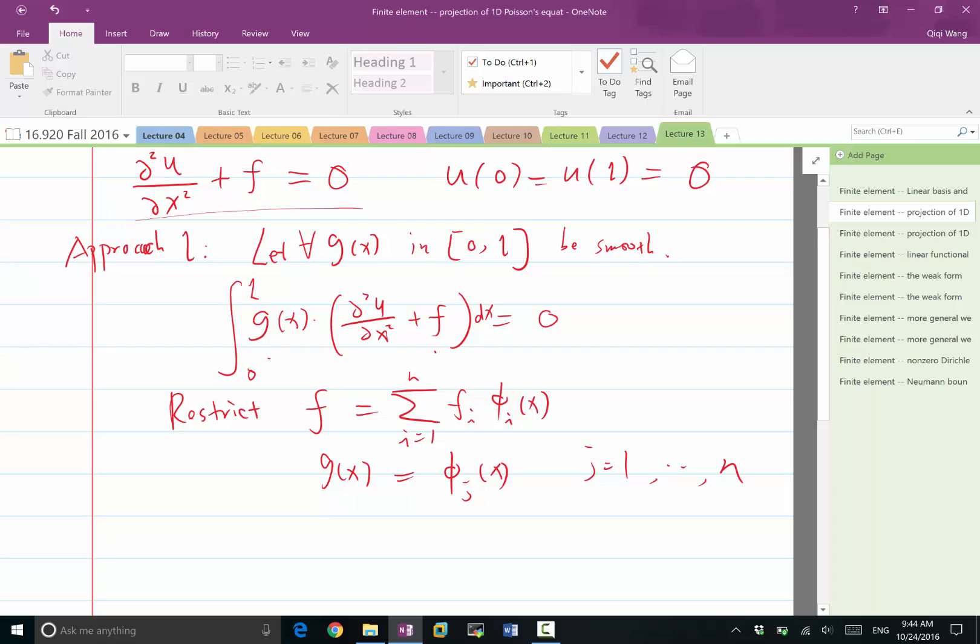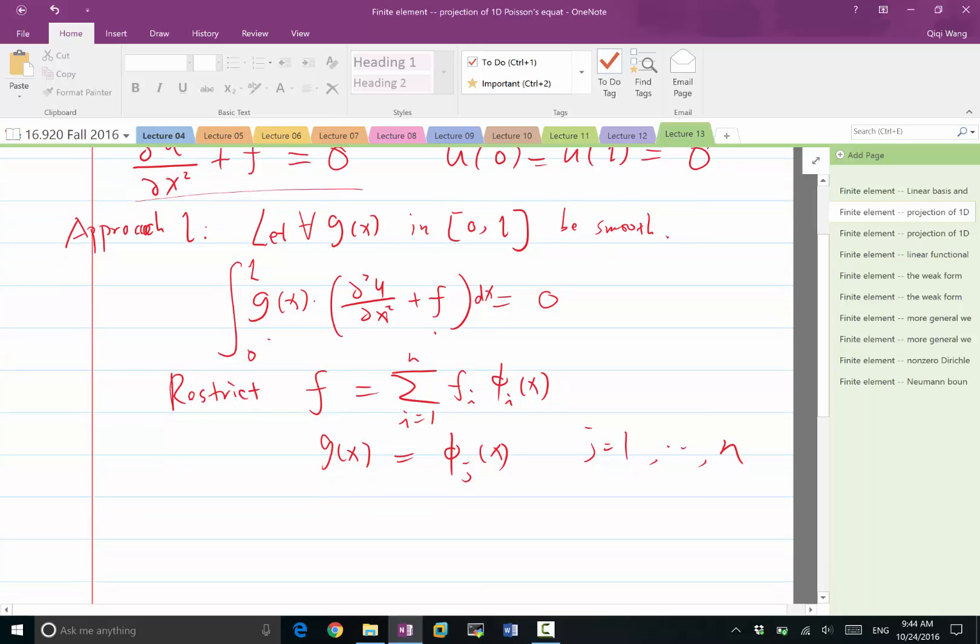The reason I can force g to be any of the basis functions is because if this equality is true for any of the phi j's, then it has to be also true for any linear combination of the phi j's, which covers an entire n-dimensional linear space. So if I perform that restriction, what I'm going to derive out of the equality is I replace g with phi j.